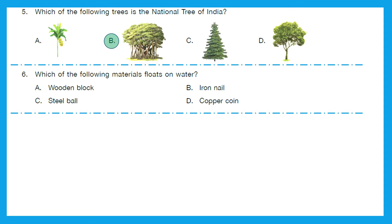Question 6: Which of the falling materials floats on water? And do you know what floats on water? Material that has less density than water, which is less denser than water. So is it wooden block, iron nail, steel ball or copper coin? Now here, the right answer is option A, wooden block. Because it is not that much denser as water and it can easily float on water.